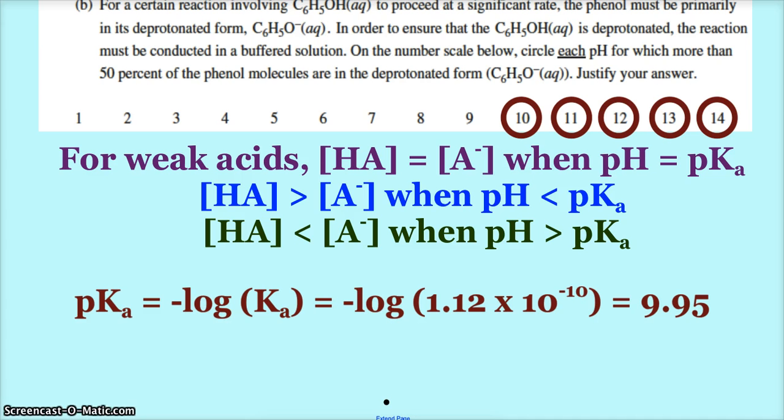And so the pKa is negative log of my Ka, so that comes out to be 9.95. So for pH is 10, 11, 12, 13, and 14, I would have more of the A minus than I would the HA. I would have more of the deprotonated phenol than the phenol itself.